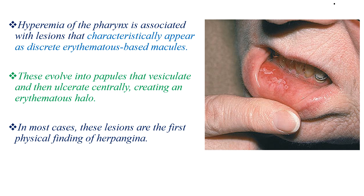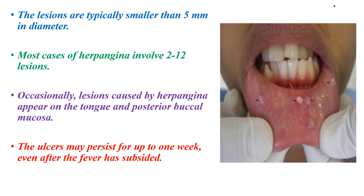Hyperemia of the pharynx is associated with lesions that characteristically appear as discrete erythematous-based macules. As you see on the image, these evolve into papules that vesiculate and then ulcerate centrally, creating an erythematous halo. In most cases, these lesions are the first physical finding of herpangina, and are typically smaller than 5 mm in diameter, involving 2 to 12 lesions.